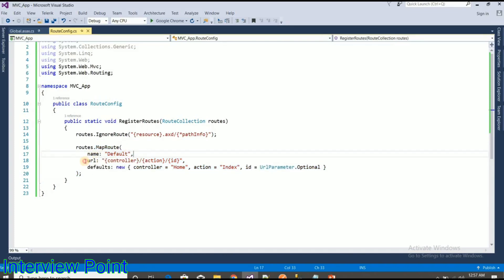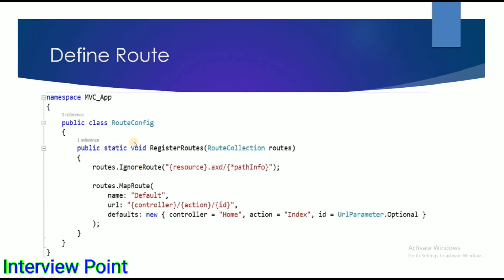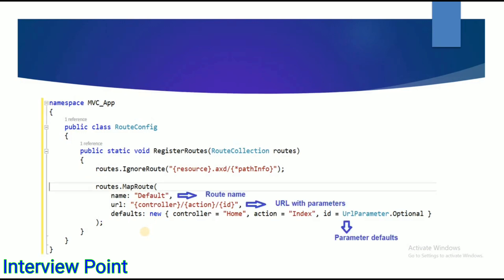So how do we define a route? This is the RouteConfig file and inside it we have a method where we define routes. This is the default route, and this is the default URL. Like that we can create a default route — this is already defined when you create an MVC application. As you can see, this is the route name, and this is the URL with parameters.